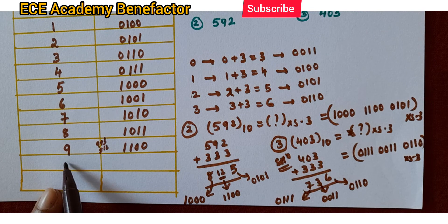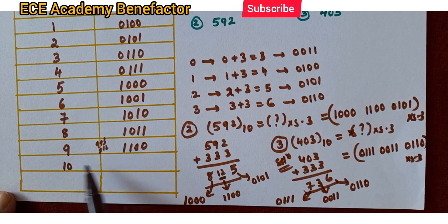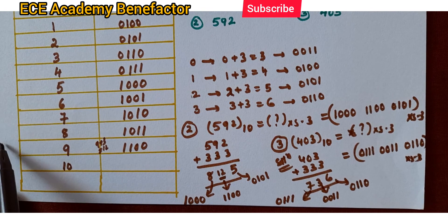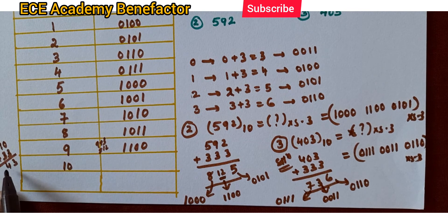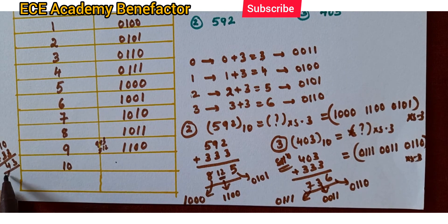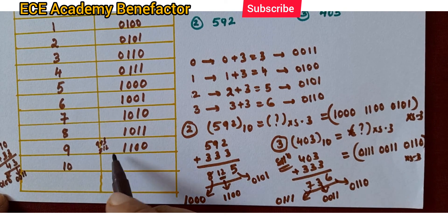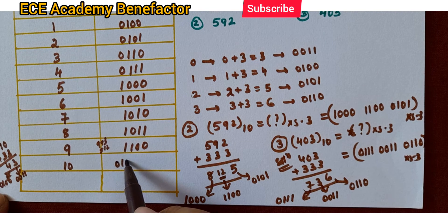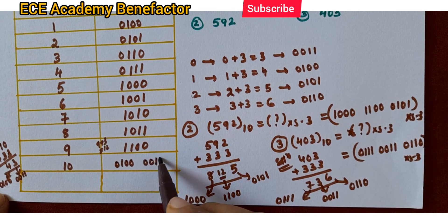What will 10 be in XS3? For 10, add 3 to each digit: 0 plus 3 equals 3, and 1 plus 3 equals 4. What is 4 in binary? 4 is 0100. And 3 in binary is 0011. So for 10 decimal in XS3, the answer is 0100 0011.